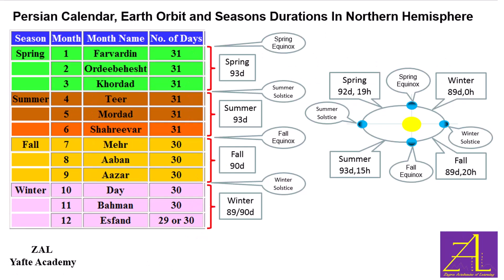The designer of this calendar was the famous Persian poet, mathematician, and astronomer Omar Khayyam, who lived between the years 1048 and 1131. His poetry became known in the West after being translated by Edward Fitzgerald in 1859.